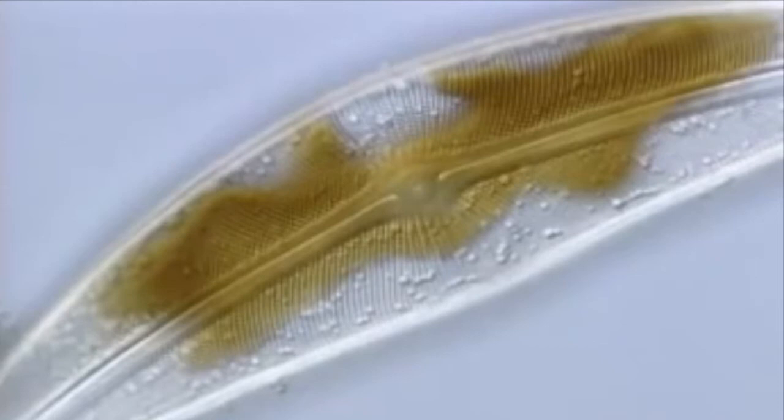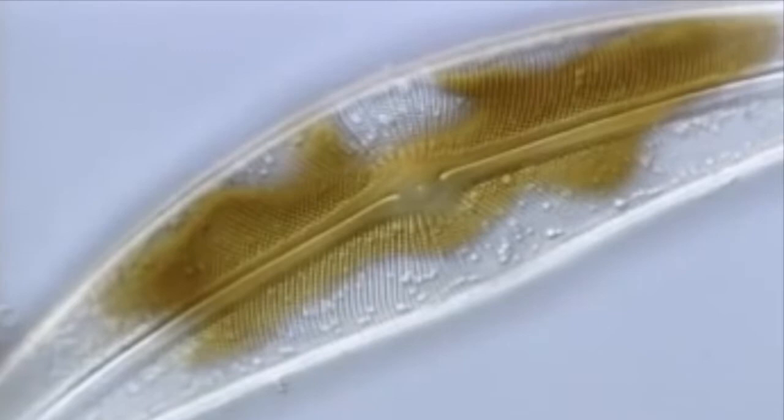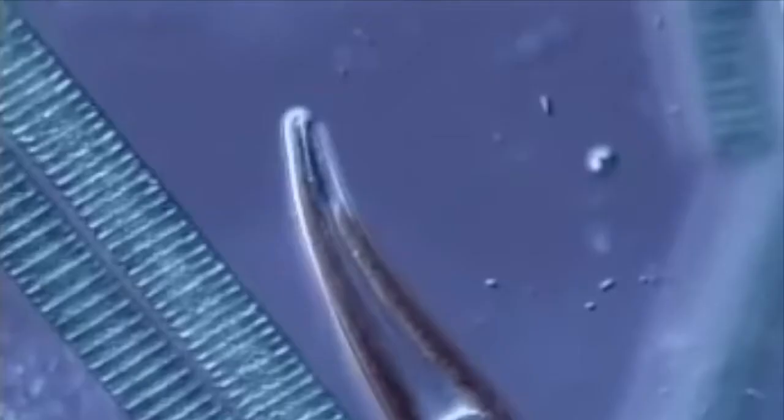The unique thing about a diatom is its house. These cells remove dissolved silica from the water and use it to construct finely sculptured glass cases. Diatoms are not alone on their evolutionary branch. DNA analysis shows that this colony of golden cells is related.